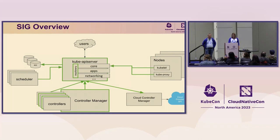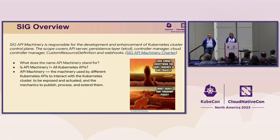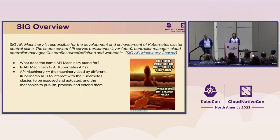The question is why we see API machinery everywhere — it reminds me of the Lion King picture: everywhere light touched is API machinery. From our charter: SIG API machinery is responsible for the development and enhancement of the Kubernetes cluster control plane. This scope includes the API server, the persistent layer or data store for Kubernetes, the controller manager, cloud controller manager, CRDs, webhooks, and more.